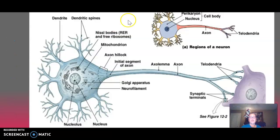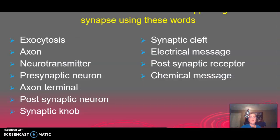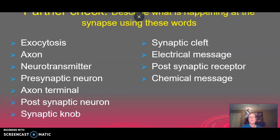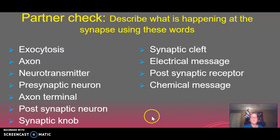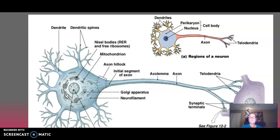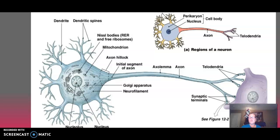In class, what I'll have you do is practice labeling with a partner. Would you be able to use all of those terms — synaptic knob, synaptic cleft, presynaptic, postsynaptic, synaptic vesicles, neurotransmitter, exocytosis — to describe what is happening at the synapse? Stop and think about it, maybe even write it out in your notes for practice. Here's another picture you can use to help.